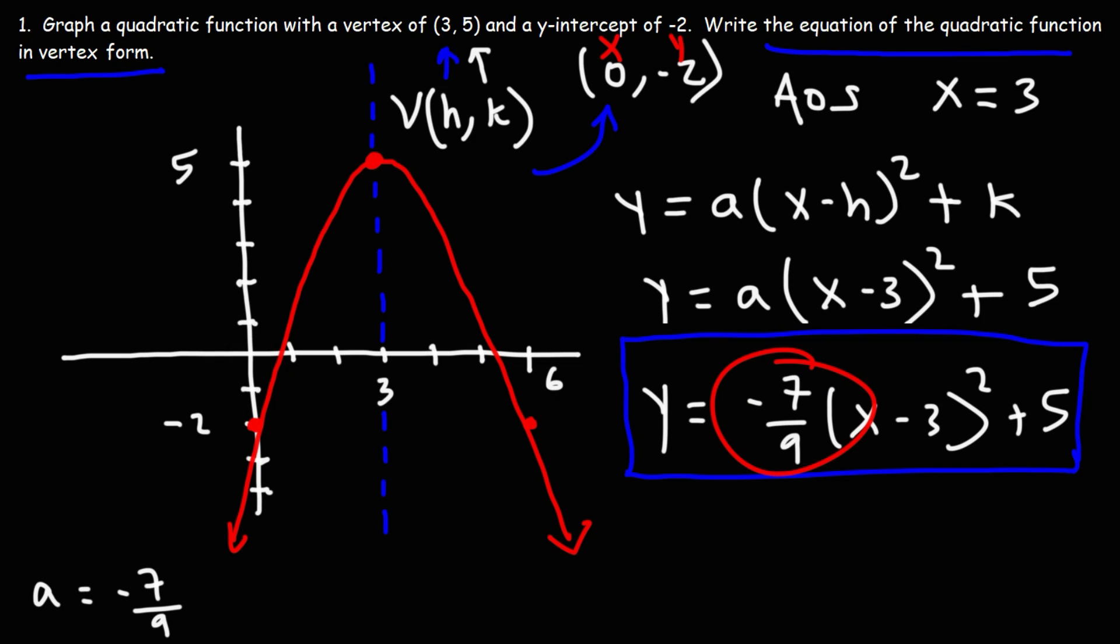Now it makes sense why we have a negative value for a. The negative value tells us that the graph is going to open downward, which means it's going to have a maximum value. The maximum value is the y coordinate of the vertex. So this function has a maximum value of 5.